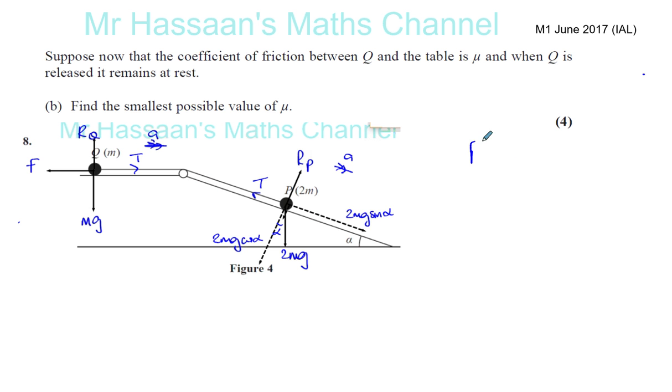Now we know that F equals mu R. And F max equals mu R, the maximum possible friction that can be reached. So basically, what they're trying to say is that when it's released, it doesn't move.